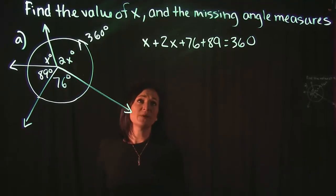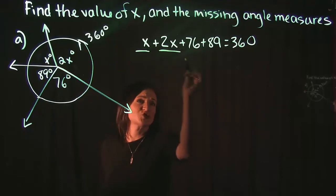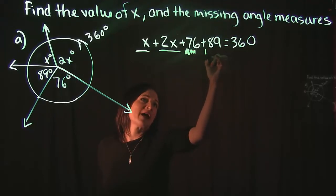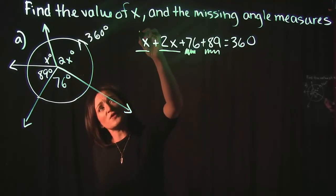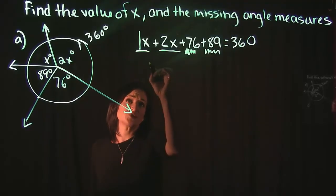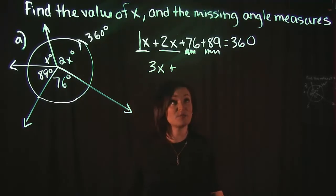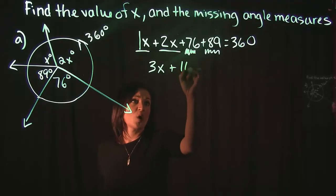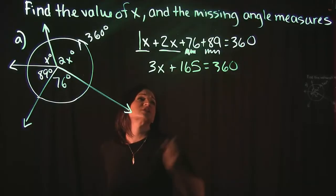We need to do some cleanup at this point, and we need to combine some like terms. So we're going to combine the x and 2x, and then we're going to combine the 76 and the 89. x plus 2x, remember that there is a 1 understood to be in front of that x, so 1x plus 2x is 3x. And when we combine 76 plus 89, we get 165, and that all equals 360 degrees.